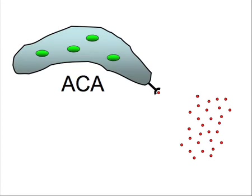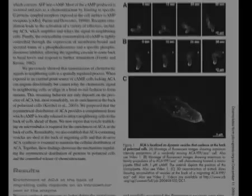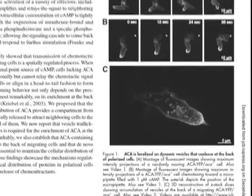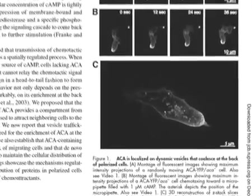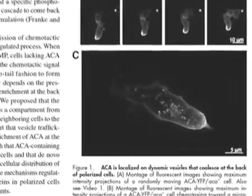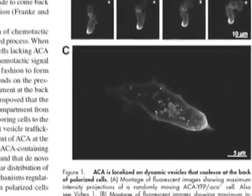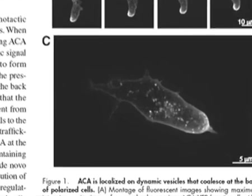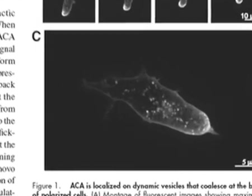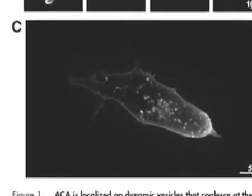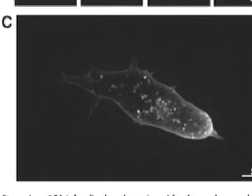ACA converts ATP into cyclic AMP, so in short, the response of the Dictyostelium to chemoattractant is to make more chemoattractant. Perron's group had previously shown that the chemoattractant-producing ACA enzyme is enriched at the back of the amoeba cells, hinting at a possible mechanism for the head-to-tail migration pattern.